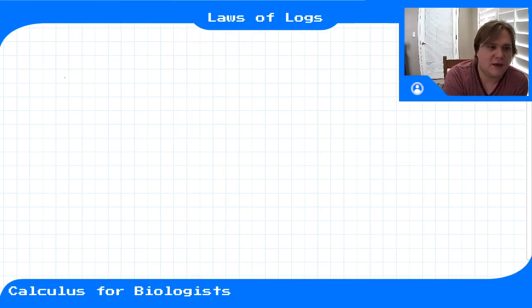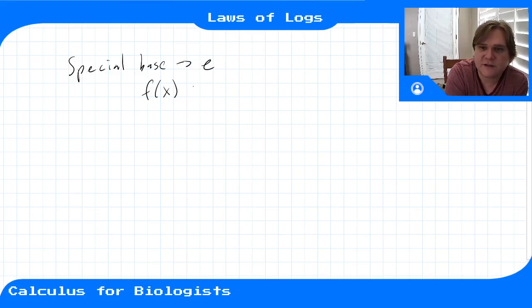So just like we had a very particular type of exponential that built up the exponential functions, we had our special base. Our typical exponential function is f(x) = e^x.